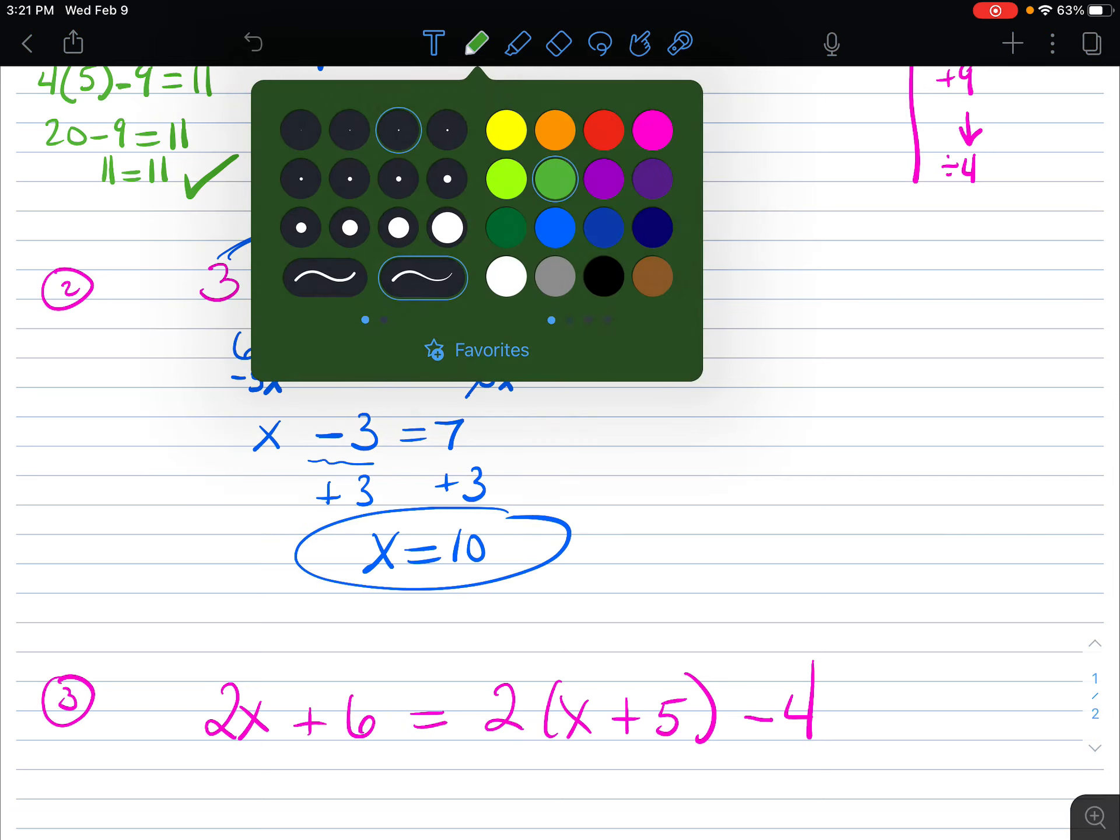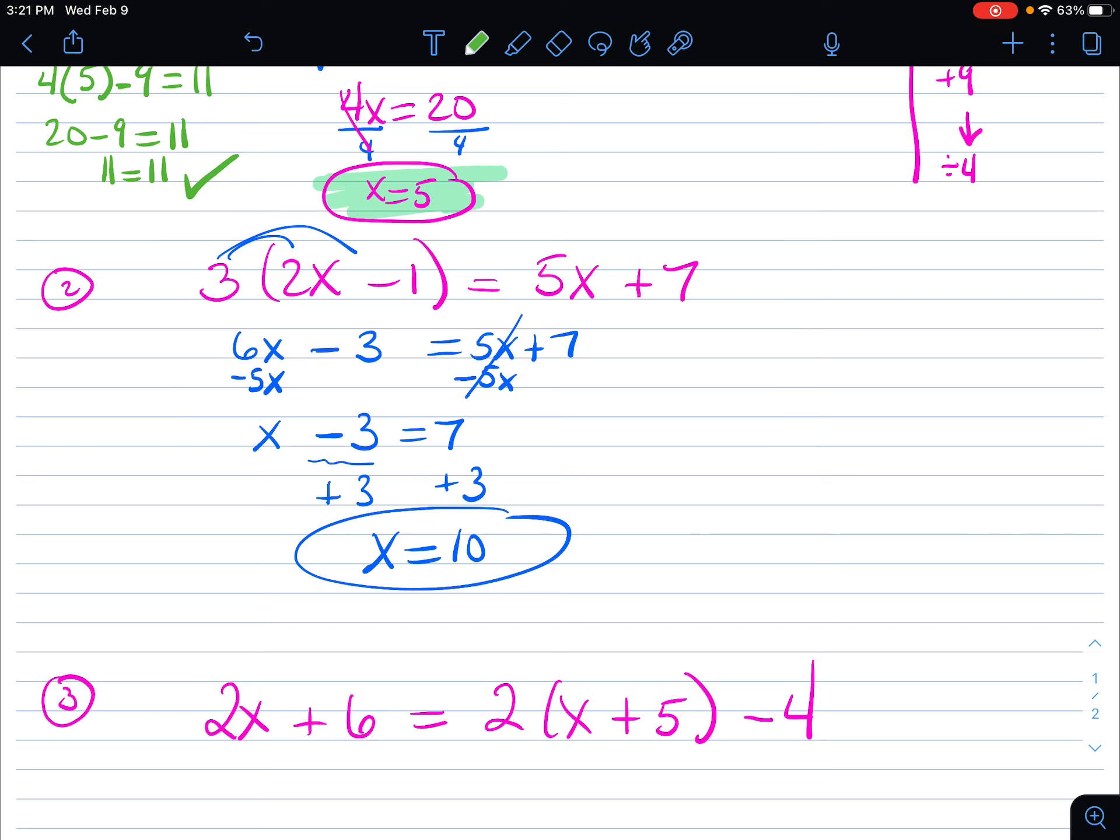Now once again, we're going to plug this in and check it. We're going to do it in the original equation. So we write 3, 2 times x, which is 10. Take away 1. Everything else stays the same. 5 times 10 plus 7.